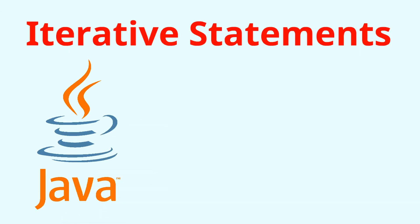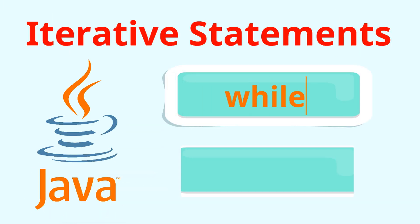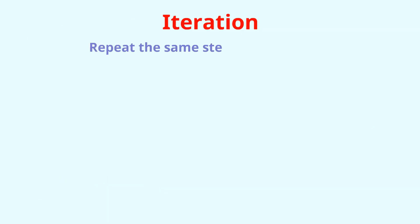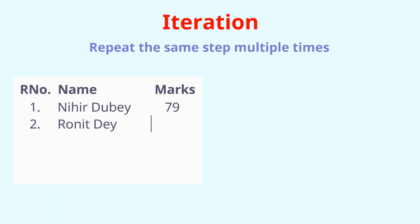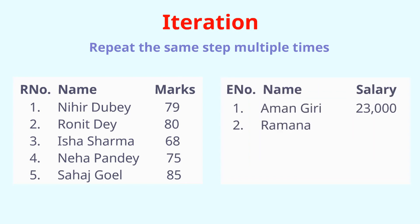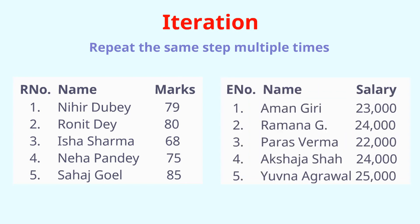In this video we will learn how to use while and do-while statements in Java. Many times in our program we have to repeat the same steps multiple times, like printing the results of all students or calculating salary for all employees. For such kinds of statements we use loops.